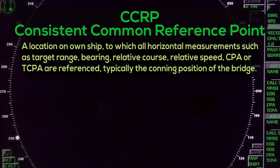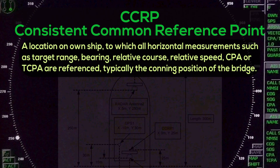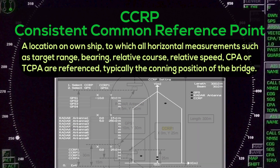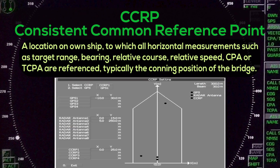CCRP — Consistent Common Reference Point: A location on own ship to which all horizontal measurements such as target range, bearing, relative course, relative speed, CPA, or TCPA are referenced — typically the conning position of the bridge.